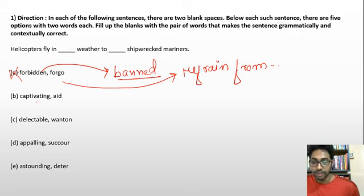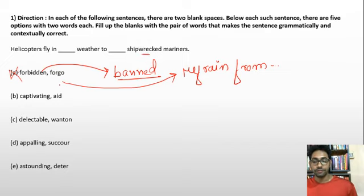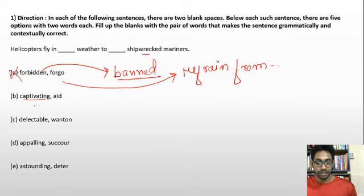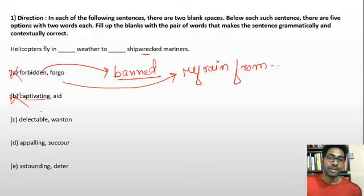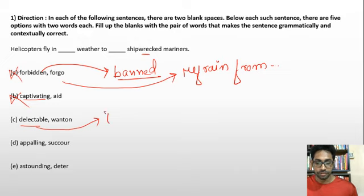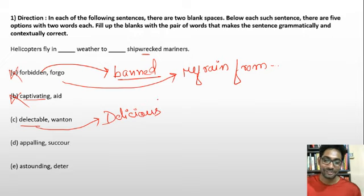Option C: 'Helicopters fly in delectable weather' — delectable means something mouthwatering or delicious. Helicopters do not fly in delicious weather, so this is also eliminated. Option D mentions 'wanton,' meaning cruel or violent action. Option E: 'Helicopters fly in appalling weather' — appalling means horrifying or awful, very dangerous. That makes sense. And 'succor' means giving support or aid to someone.